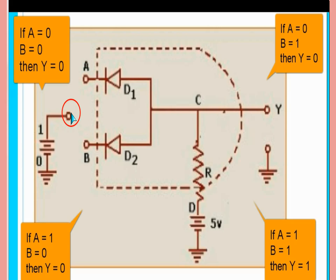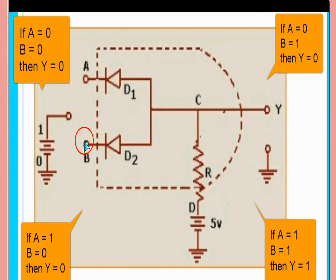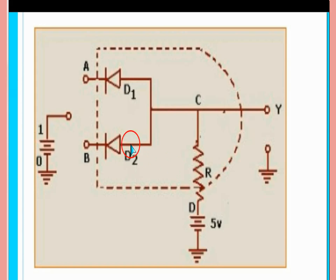Similarly, if you apply positive voltage at the other input, that diode becomes reverse biased but the first diode is still forward biased, current flows through it, and again this will be zero. If positive voltage is applied at both inputs, both diodes are reverse biased, no current flows, and whatever the potential is at the supply, that same potential will appear at C. So Y will be at the high potential. If A is one and B is one, the diodes are off, and the same potential appears at the output — one, one means one. This is how the diode circuit gives the logic of the AND gate.